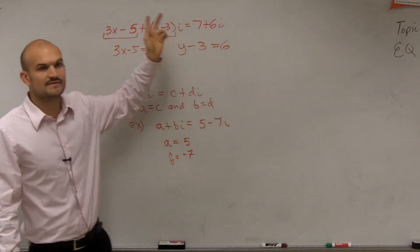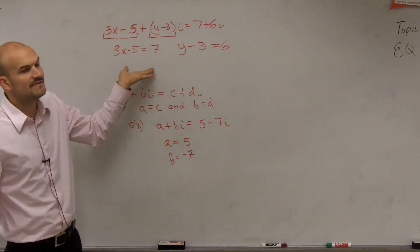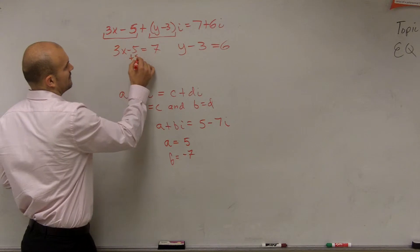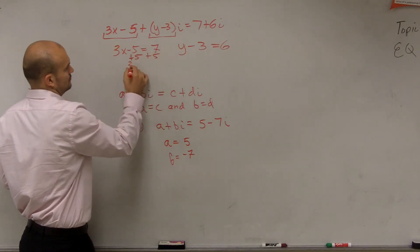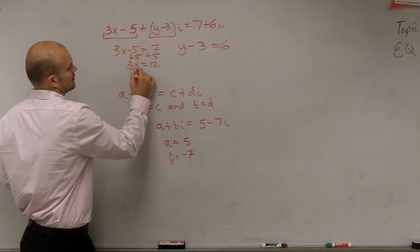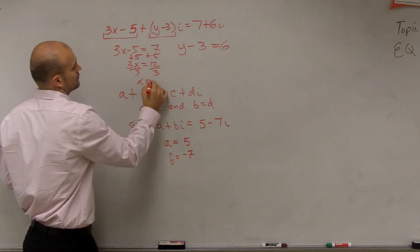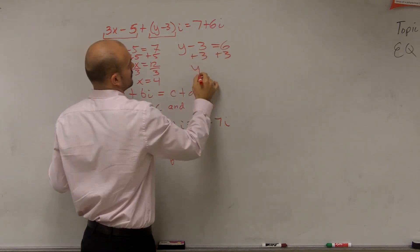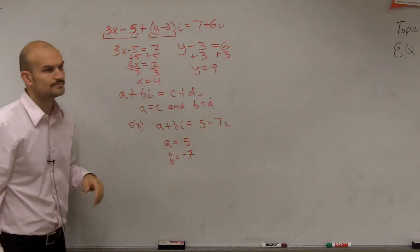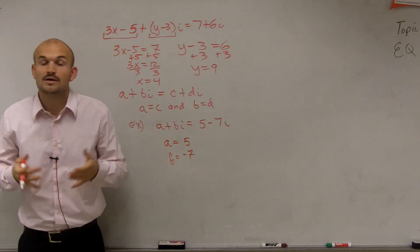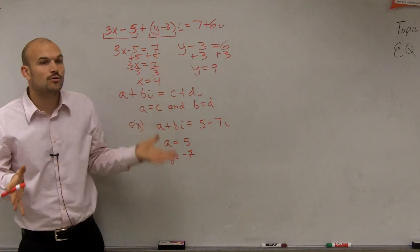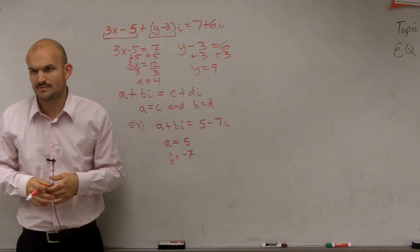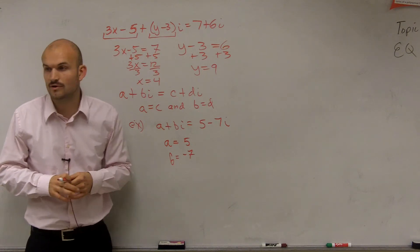See how the coefficients have to equal the coefficients? Now can we find the values of x and y? Yeah. Add five — x equals four. Y equals nine. There you go. So we can use the equality of complex numbers to help us find different values, and that's one way it's helpful.